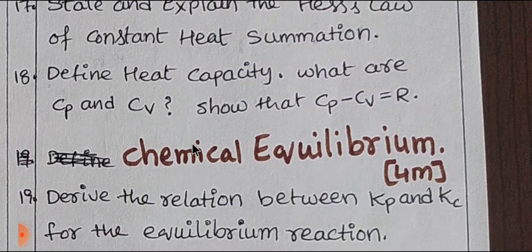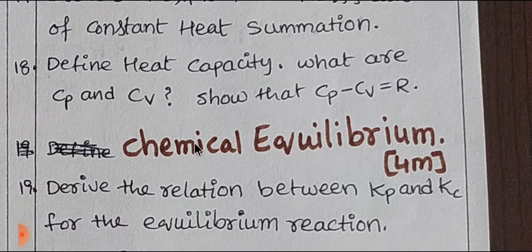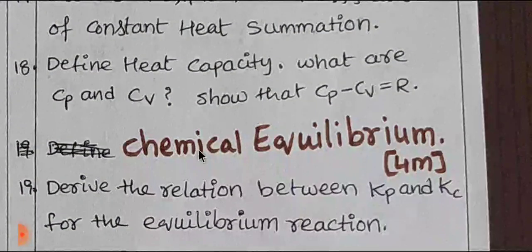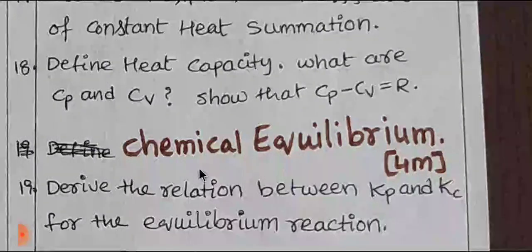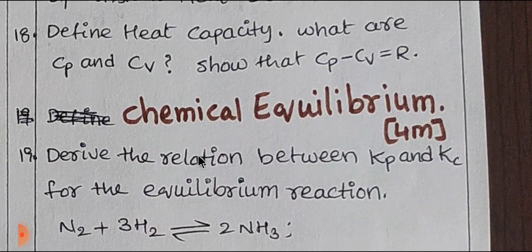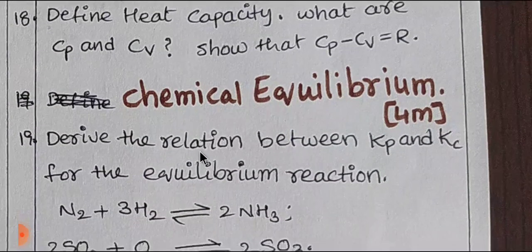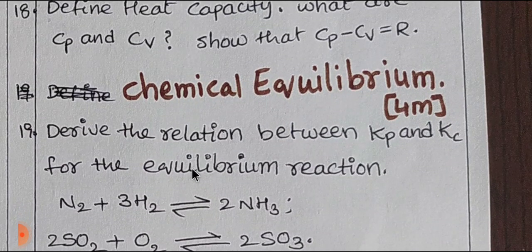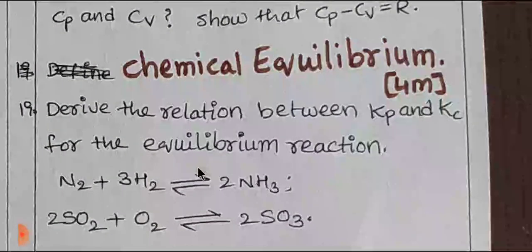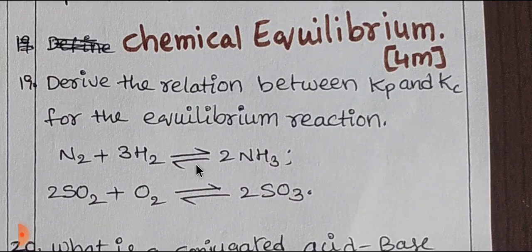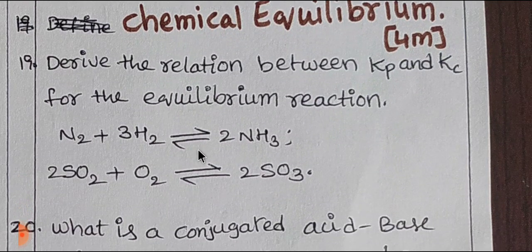The next lesson is Chemical Equilibrium. You have chemical equilibrium and acids and bases, with 4 marks. This lesson is important. In the 19th question, you have two equations to write; in the exam, this question is essential.